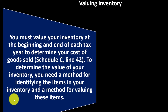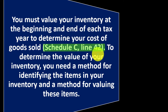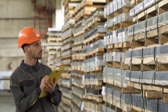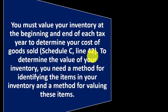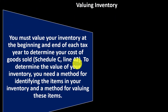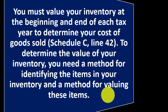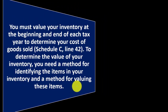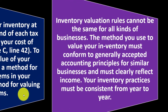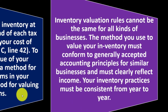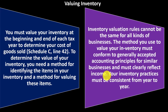Valuing inventory: you must value your inventory at the beginning and end of each tax year to determine your cost of goods sold — that's Schedule C, line 42. The cost of goods sold calculation: beginning inventory plus purchases, or if you made the inventory, the cost of goods manufactured, giving you goods available for sale, minus ending inventory, equals the cost of goods sold. To determine the value of your inventory, you need a method for identifying the items and a method for valuing them. Inventory valuation rules cannot be the same for all kinds of businesses; the method you use must conform to generally accepted accounting principles for similar businesses and must clearly reflect income.